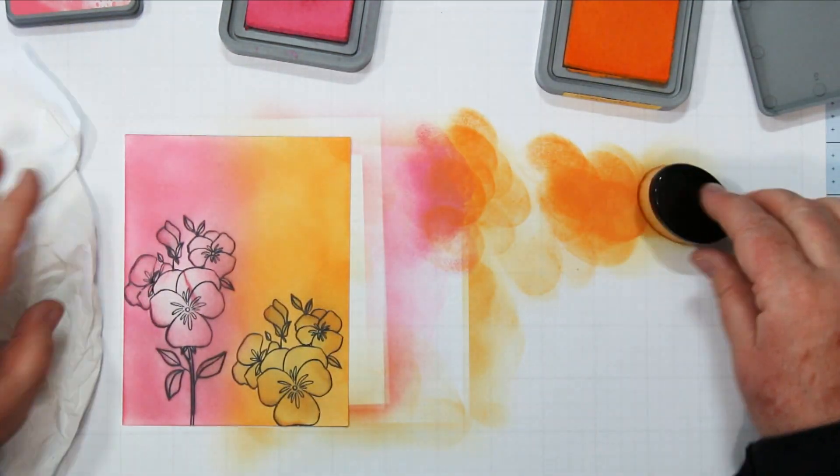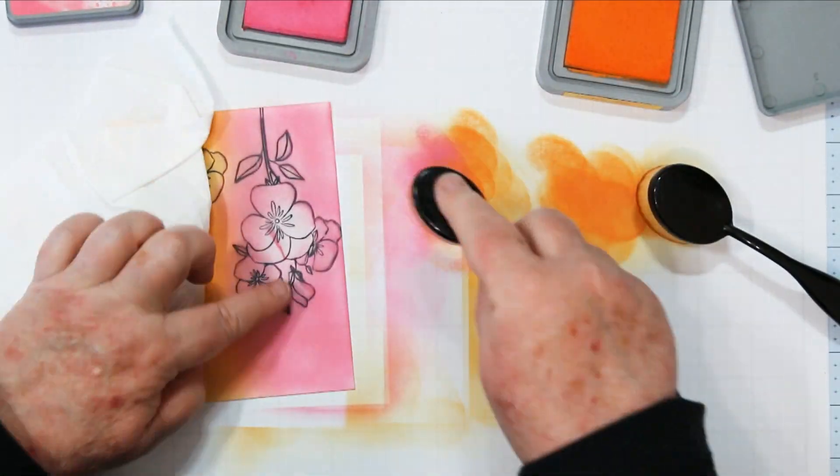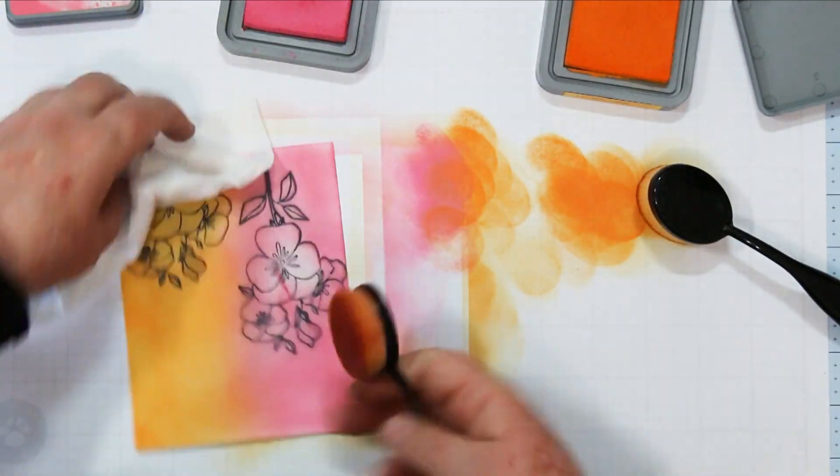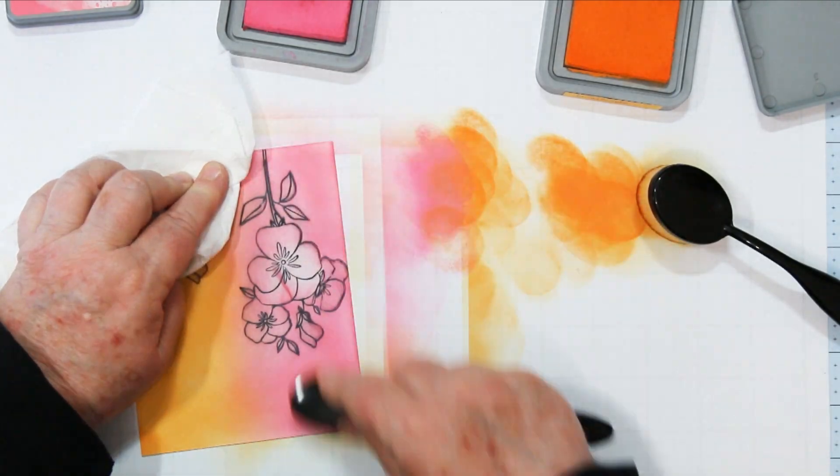And now I'm just kind of filling in some white spots and I'm flipping this back over because there's a light spot there right between the pansies. So I just want to darken that up a little bit.